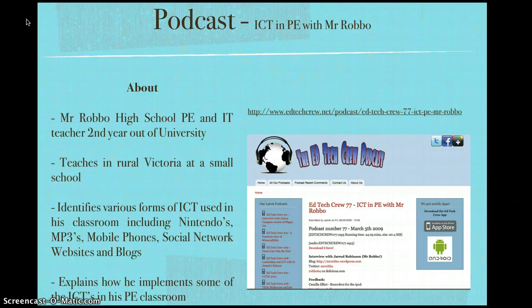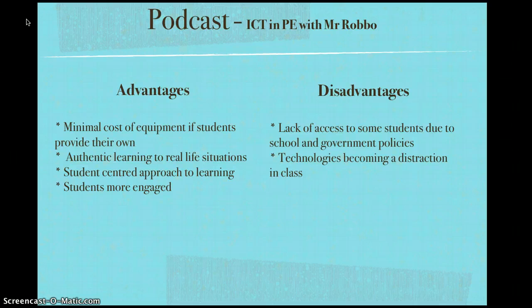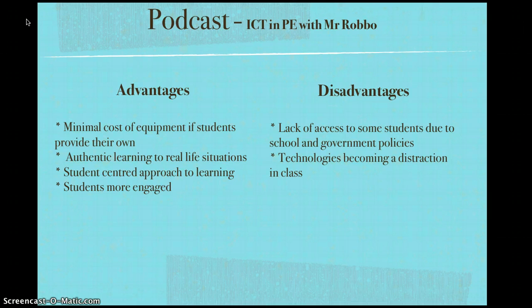The next forms of technologies were discovered on a podcast interview of a young IT and PE teacher teaching in rural Victoria. He discusses how Nintendos, MP3s, mobile phones, social networking sites and blogs can be implemented into PE classrooms. Some of the advantages of implementing these forms of ICT are that it reduces school cost of purchasing equipment if students provide their own, for example mobile phones. It encourages authentic learning of real life situations and is a student centred approach to learning where students are responsible for their own learning. He also found that by implementing these technologies, students were more engaged. Some disadvantages are that there is a lack of access for some students due to school and government policies, and the technologies if not monitored properly can become a distraction in class.